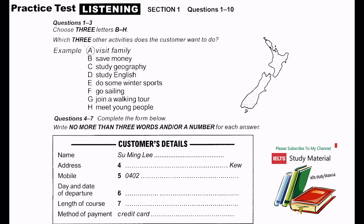Listening Section 1. You will hear a conversation between a travel agent and a customer. First, you have some time to look at questions 1 to 7. You will see that there is an example that has been done for you. On this occasion only, the conversation relating to this will be played first.